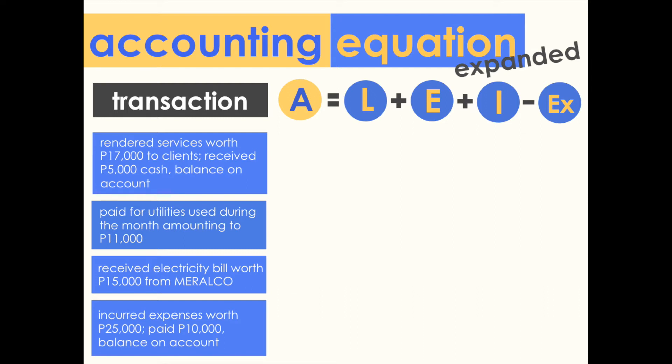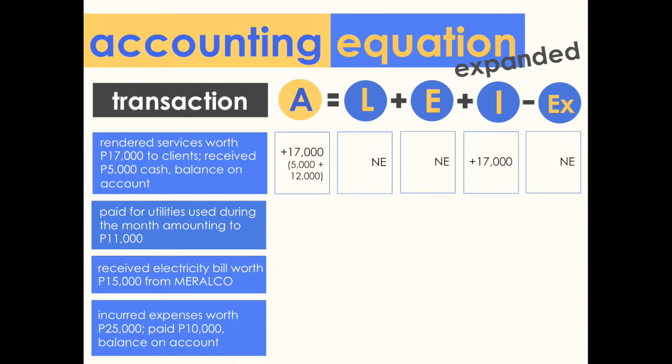Transaction one: rendered services worth 17,000 pesos to clients — received 5,000 pesos cash, balance on account. The company earned service income, so there will be a 17,000 peso increase in income. In exchange, the company received 5,000 pesos in cash and the remainder of 12,000 on account — an increase of 12,000 pesos in accounts receivable. The impact is a 17,000 peso increase in assets, no effect on liabilities and equity before profit or loss, and a 17,000 peso increase in income.